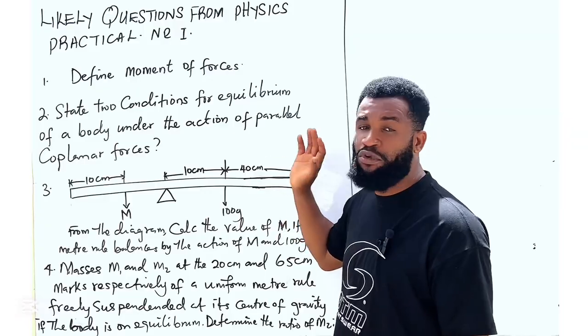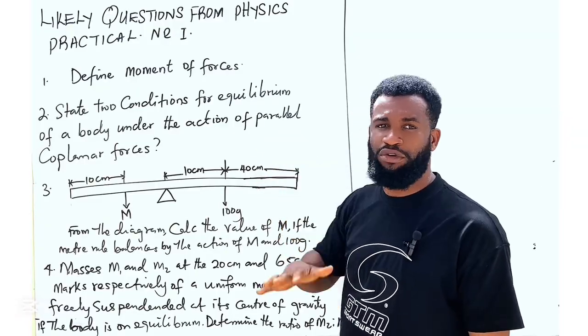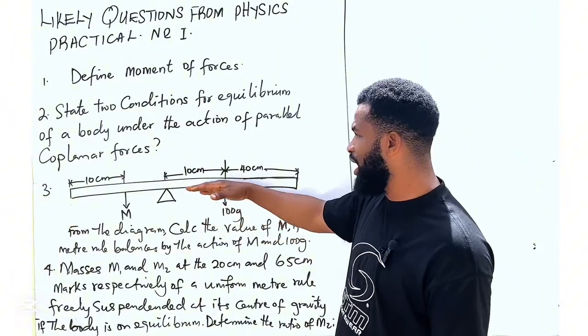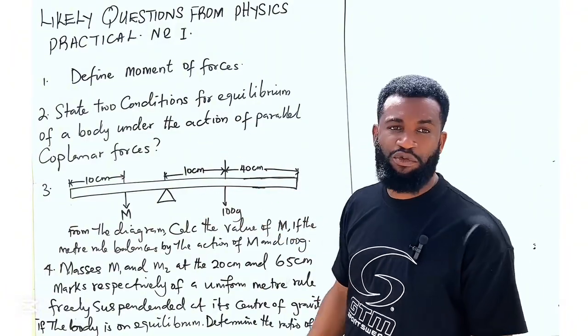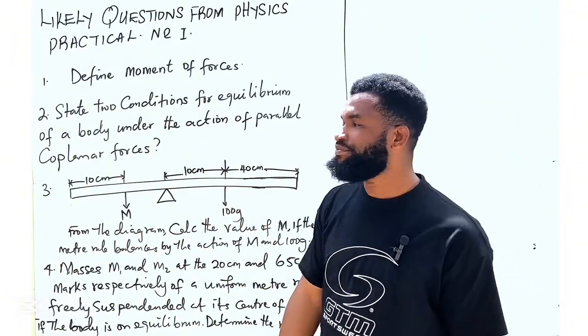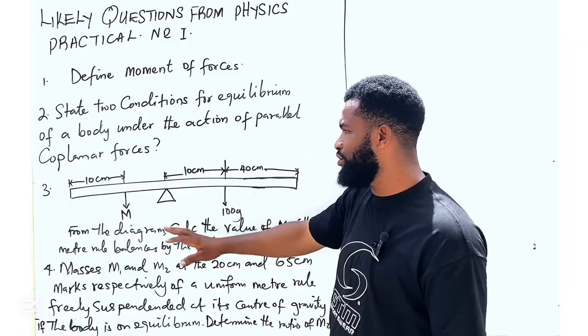Number two, the sum of upward moments must be equal to the sum of downward moments. So the algebraic sum of all the forces in one direction must be equal to zero. And that is the two conditions.